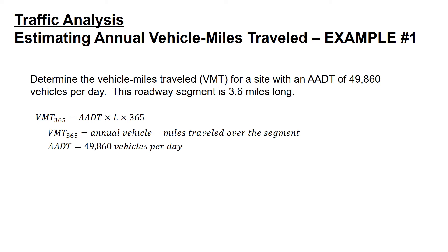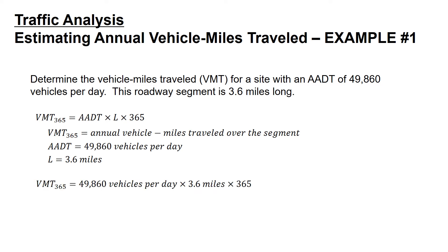The AADT is given as 49,860 vehicles per day and the length is given as 3.6 miles. Multiplying these values: 49,860 vehicles per day times 3.6 miles times 365 gives us an annual vehicle miles traveled of 65,516,040 vehicle miles traveled.